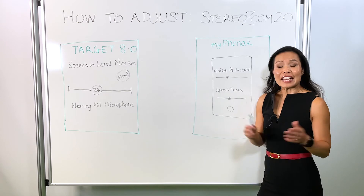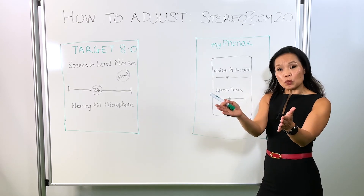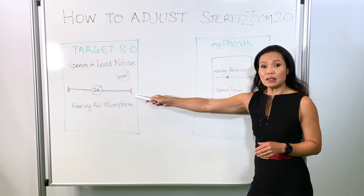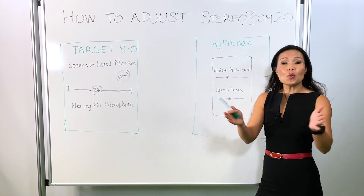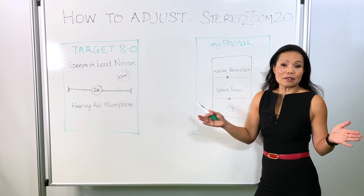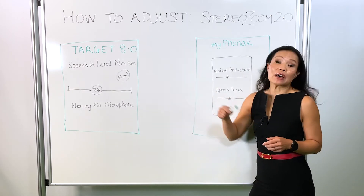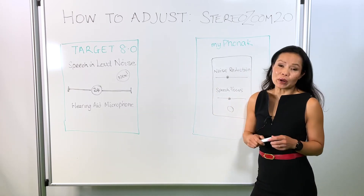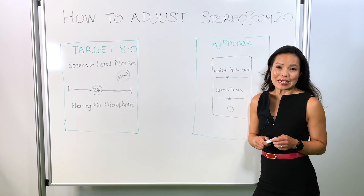They can narrow the focus even more up to 27, or widen it down to 21 for even more environmental awareness.